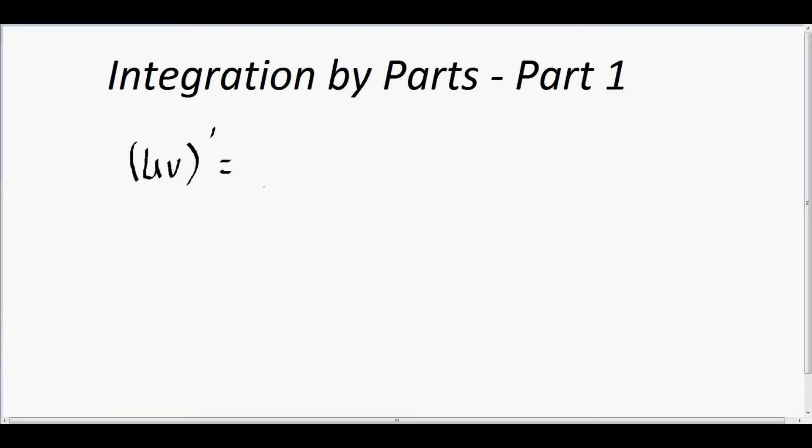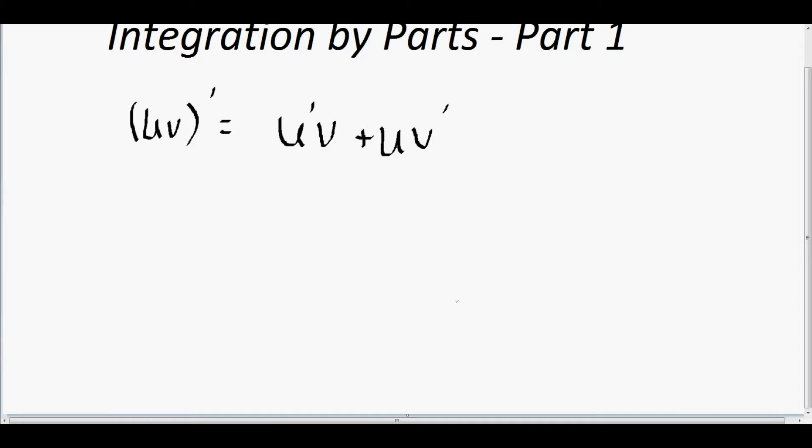The formula called the product rule was just u prime v plus u v prime, or some equivalent of that. So now if we want to find a formula to integrate two functions being multiplied together, basically we take this product rule formula for differentiation and solve for this u v prime term.